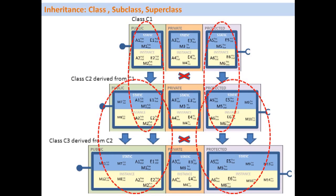This kind of relationship between C1, C2, and C3 is called an inheritance tree. C1 is the superclass of C2, and C2 is the superclass of C3. Conversely, C3 is the subclass of C2, and both C2 and C3 are subclasses of C1.